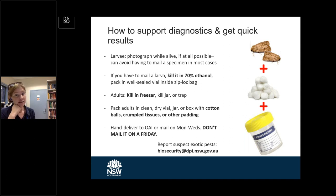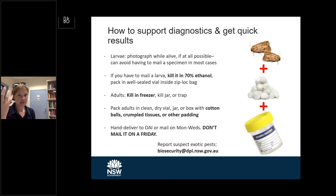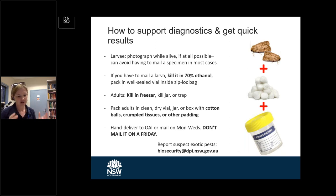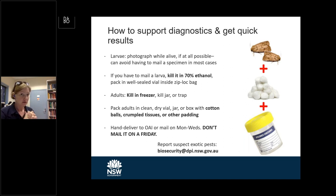If you have to mail a larva, please kill it in 70% ethanol and pack it in a well-sealed vial inside a zip-lock bag. We're happy to give mailing instructions and send out prepaid mail-back containers. For adults, they need to be killed first — as a suspect exotic pest — and then placed inside a hard-sided container with padding such as cotton wool, tissues, or crumpled paper towels, because otherwise the moths get shaken around and all the scales go everywhere, losing critical diagnostic characters. Please don't put these things in the mail on a Thursday or Friday — they'll sit over the weekend, and a large container of dead moths left in hot conditions for several days smells a lot like rotting shrimp, which makes our diagnostic job slower and a lot less fun.